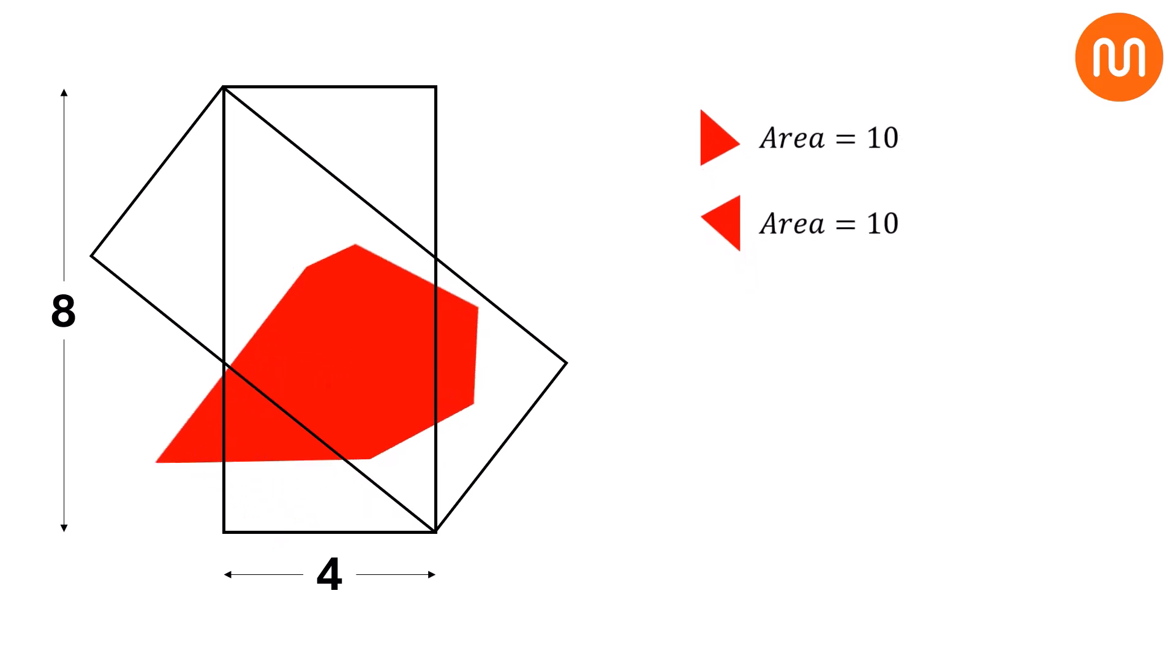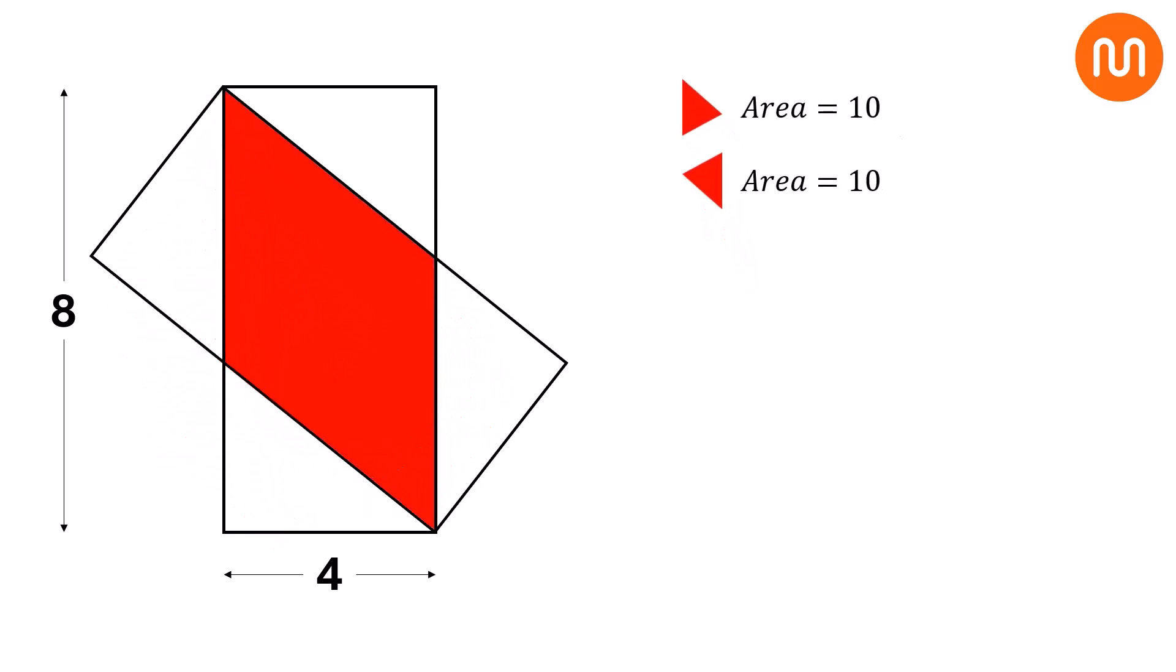Now, let's return to our sketch. The overlapping area is the sum of these two triangle areas. So, the overlapping area is 10 plus 10. So, the overlapping area is equal to 20. And that's our solution.